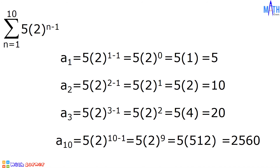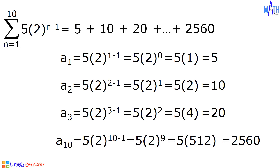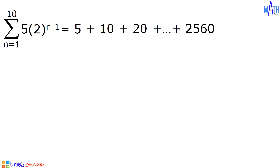This summation notation yields the geometric series 5 plus 10 plus 20, all the way to 2,560. Let us find the sum using the formula. In this series, the first term, or a sub 1, is equal to 5. If we divide any term by its preceding term, the common ratio is equal to 2. N is equal to 10.